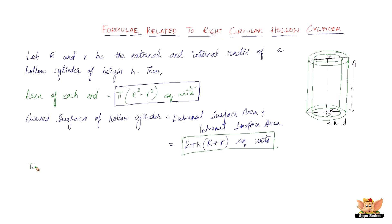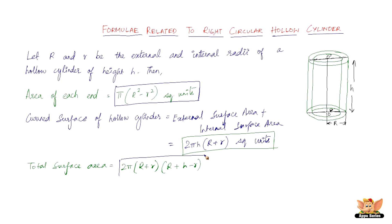And then we've got the total surface area. The total surface area is going to be the sum of the curved surface area and then the area of both the ends. So we get 2π times (capital R plus small r) times (capital R minus small r plus h). This is the formula to find the total surface area of a right circular hollow cylinder. All you have to know is the bigger radii, smaller radii, and the height of the hollow cylinder.